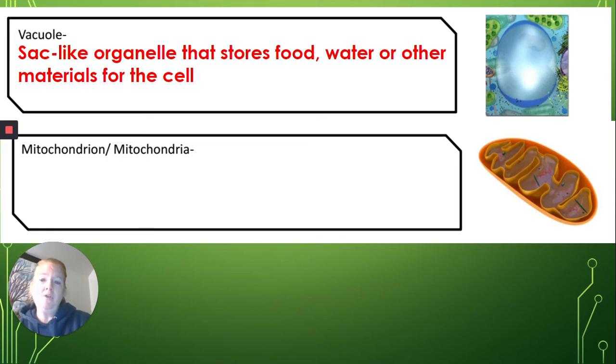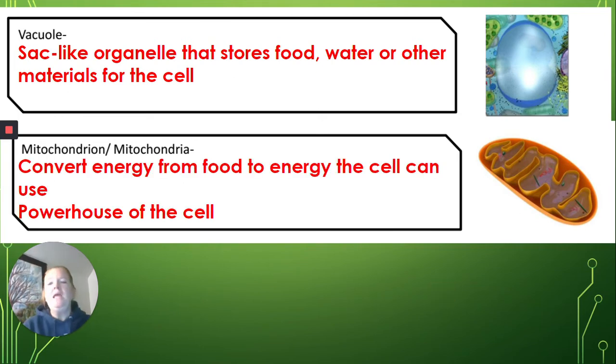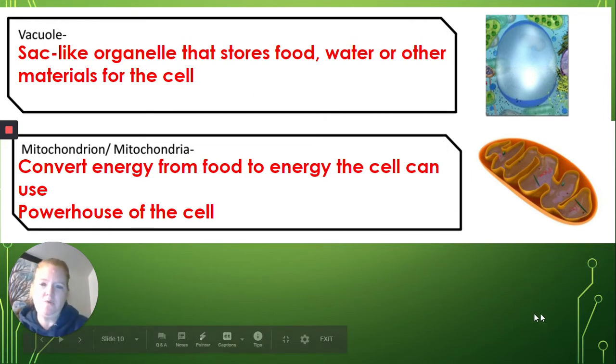And then mitochondria, or one mitochondria is called a mitochondrion. And mitochondria convert energy from food to energy the cell can use. And that kind of energy the cell can use is called ATP. So for that reason, mitochondria I refer to as the powerhouse of the cell. They produce ATP, that energy the cell can actually use.